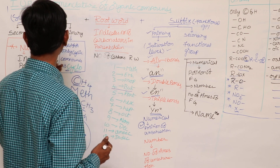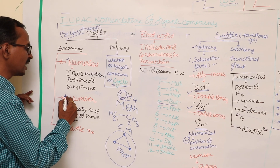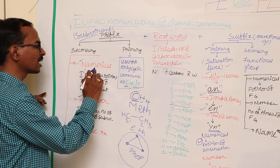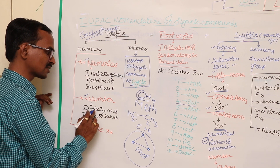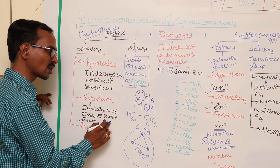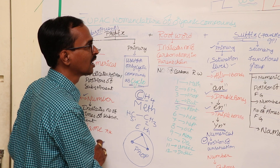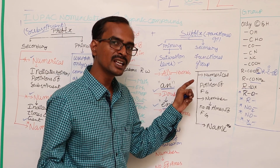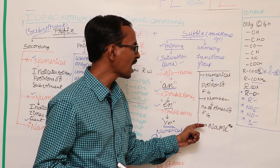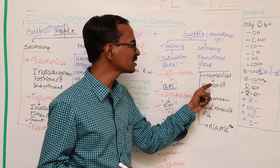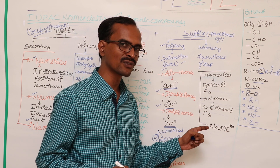The secondary prefix is of three different types. The numerical secondary prefix indicates the position of the substituent. The number secondary prefix indicates the number of times the substituent appears. Similarly, the secondary suffix is also of three different types: numerical, number, and name. Numerical indicates the position of the functional group, number indicates how many times the functional group appears, and name indicates the name of that particular functional group.